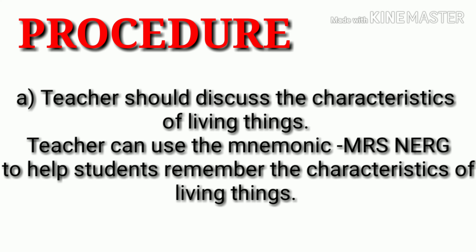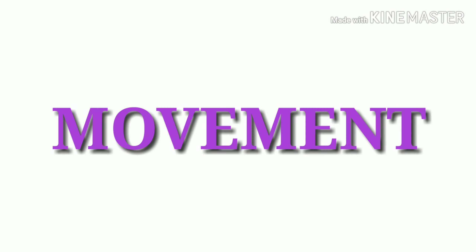MRS NERG stands for: M for Movement, R for Reproduction, S for Sensitivity, N for Nutrition, E for Excretion, R for Respiration, and G for Growth. This is how students will remember the characteristics of living things. The teacher must explain these characteristics beginning with Movement.